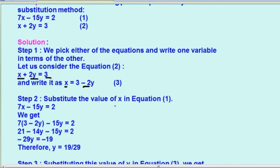अब हम क्या करेंगे? Substitute the value of x in equation one. Equation one में हम x की value को substitute करेंगे. हमारा equation one है 7x minus 15y equals to 2. यहाँ पर seven के आगे x है, तो हमने जो x की value ली थी x equals to 3 minus 2y वो डाल देंगे. तो यह हो जाएगा 7 into (3 minus 2y) minus 15y equals to 2. Multiply करेंगे: 7 into 3 हो जाता है 21 और 7 into minus 2 हो जाता है minus 14y. तो यह equation हो गया 21 minus 14y minus 15y equals to 2.